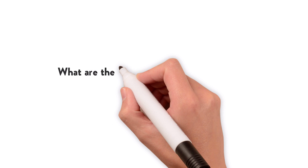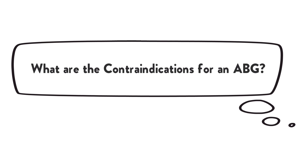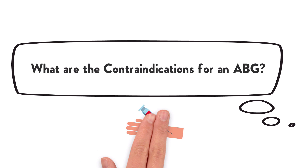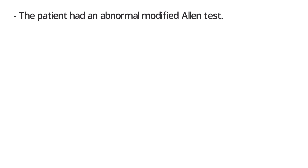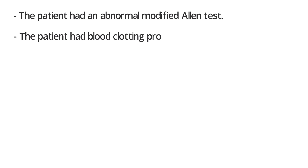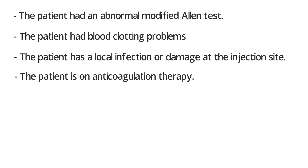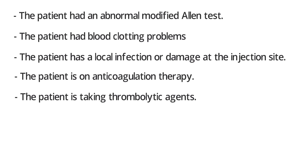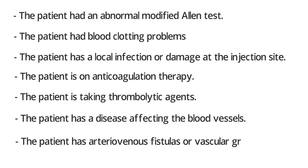What are the contraindications for an ABG? Not all patients are potential candidates for an ABG test. Here are the contraindications: the patient had an abnormal modified Allen test; the patient had blood clotting problems; the patient has a local infection or damage at the injection site; the patient is on anticoagulation therapy; the patient is taking thrombolytic agents; the patient has a disease affecting the blood vessels; and the patient has arteriovenous fistulas or vascular grafts.